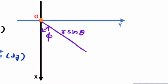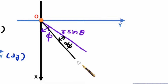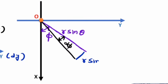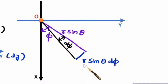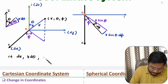What will happen if you change angle phi? If you change angle phi by d phi, then the dimension is getting changed by this amount, which is this radius into d phi. This radius is r sine theta, so the dimension changes by r sine theta d phi. Therefore, a change in phi results in a dimensional change of r sine theta d phi.